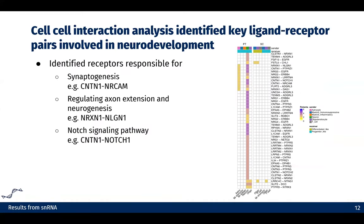By looking into the actual ligand-receptor pairs derived from our analysis, we identified receptors responsible for synaptogenesis — which makes sense since we hypothesize this population is developing synapses with normal neurons. Additionally, we identified receptors responsible for regulating axon extension and neurogenesis, potentially contributing to how they become mobile and invasive and land in the normal brain. We also identified ligand-receptor pairs associated with the Notch signaling pathway, suggesting this population may use normal neurodevelopmental pathways to proliferate.